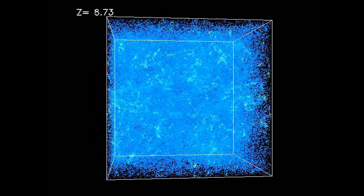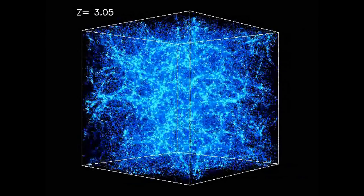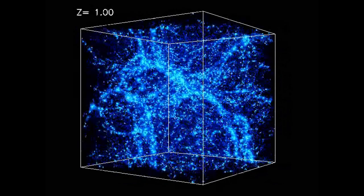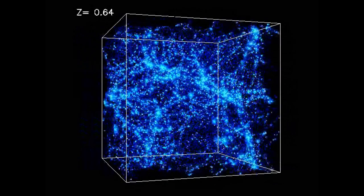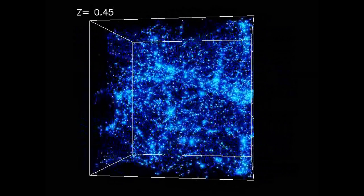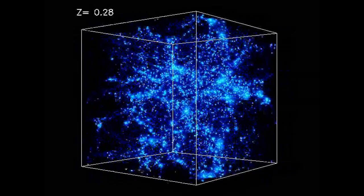This video shows a supercomputer simulation of that process. It could be that the most massive galaxies formed where the emerging filaments met each other, producing a high concentration of dark matter, and therefore good conditions for galaxy formation.